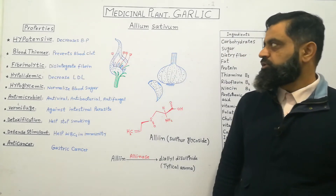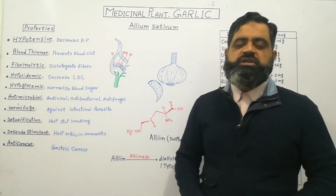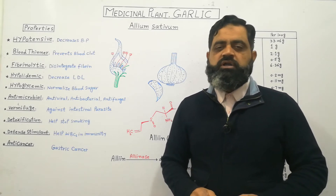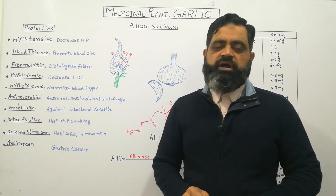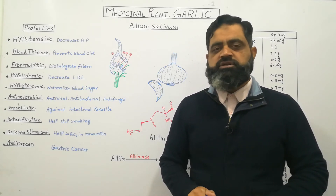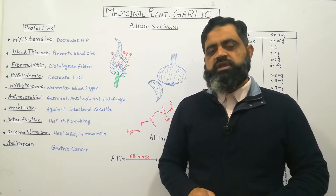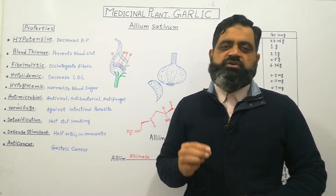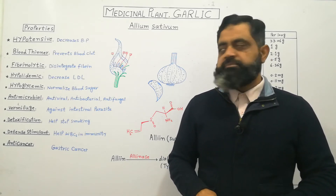If you look at the properties of garlic, garlic is hypotensive — meaning it decreases blood pressure due to its blood-thinning properties. It has been seen that if you have high blood pressure and you eat raw garlic, 3 cloves a day, or take 3 to 6 capsules per day, your blood pressure will decrease by 4 points, so it helps to control your blood pressure.